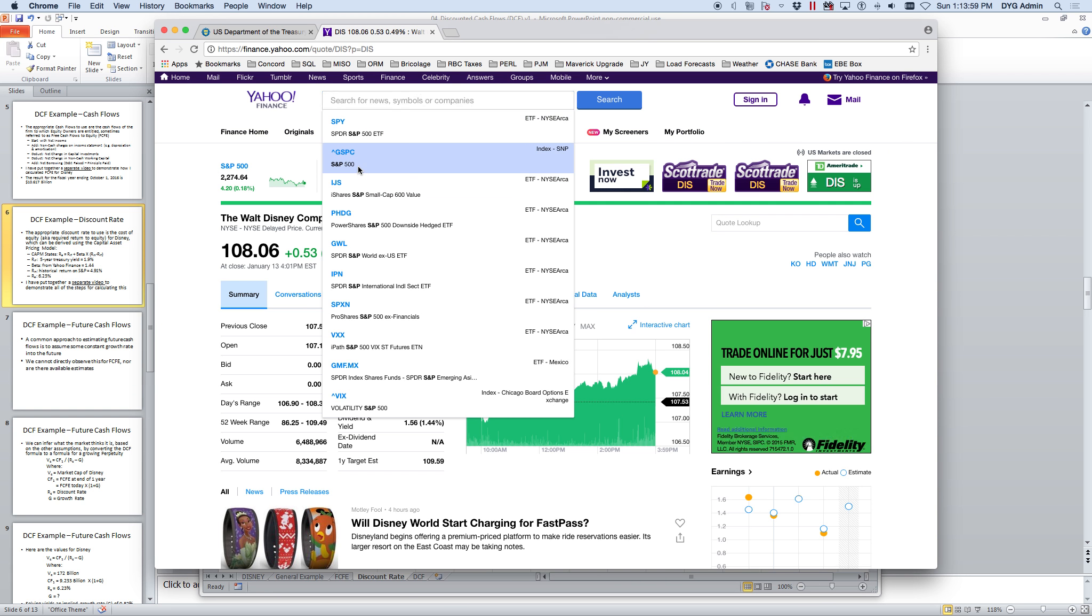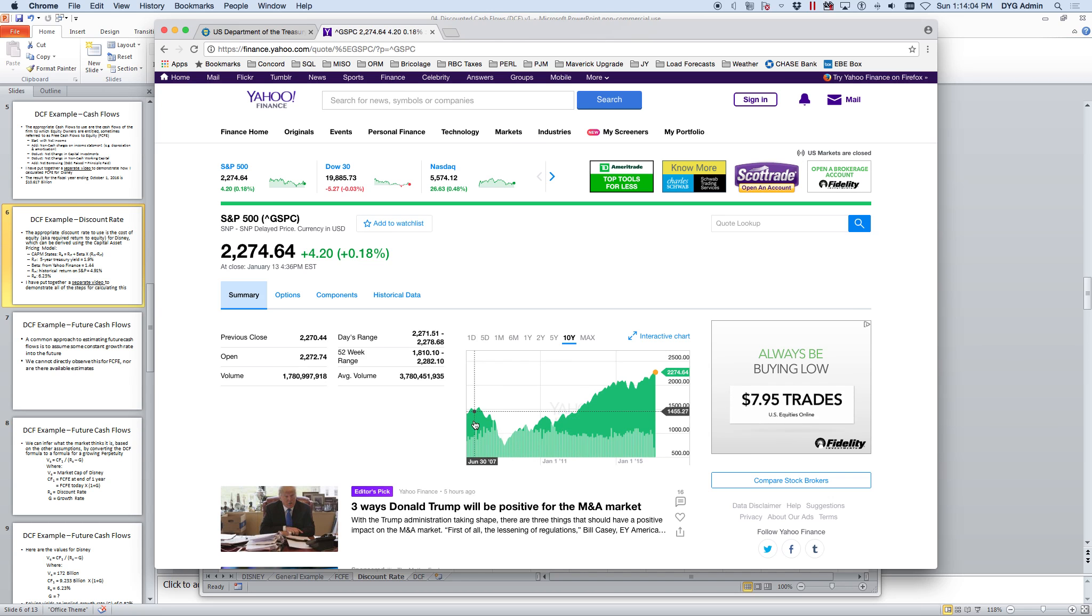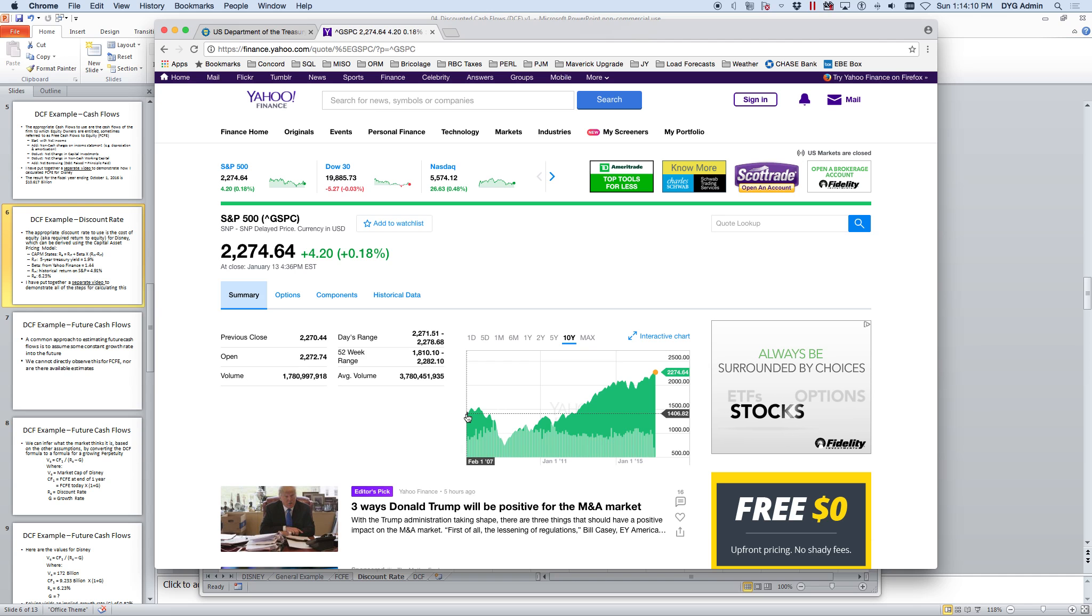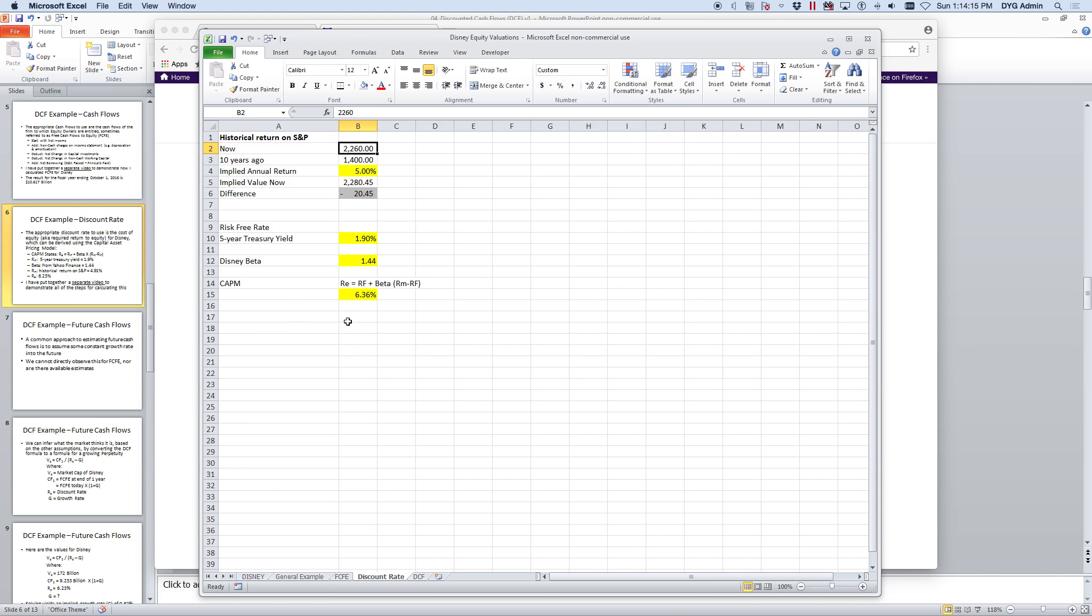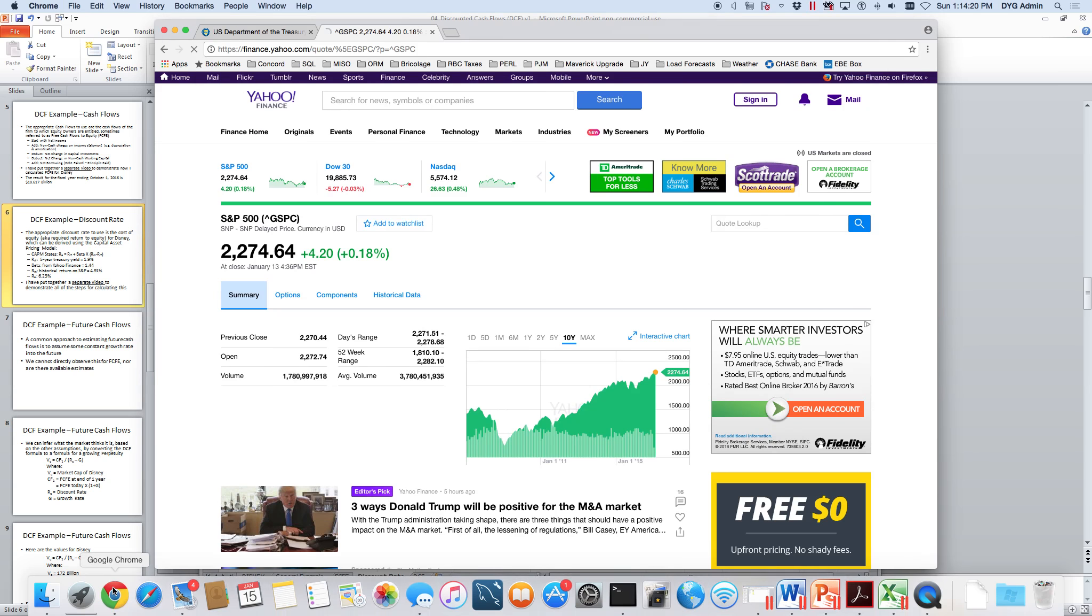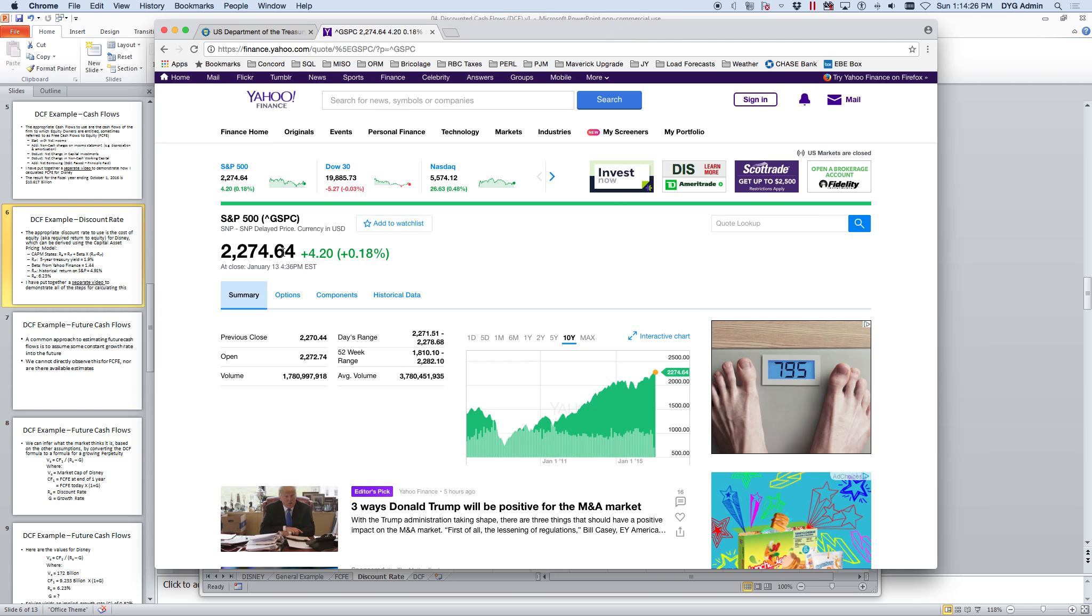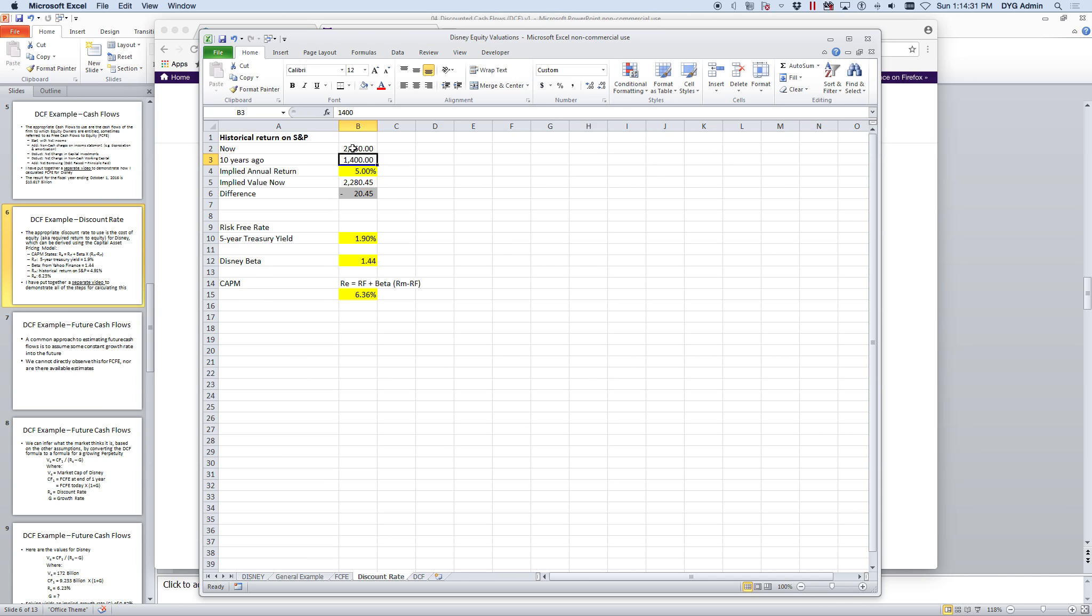We can go back to Yahoo Finance. Let's go get the S&P 500. And let's go ahead to the 10-year, go back here, see what its value was. At that time, it was about $1,400. So that's where I got this value in here of about $1,400. You can see right now it's showing at $2,274. It was $2,260 when I did this. I'm fine with adjusting that. I don't think it's going to make too much of a difference.